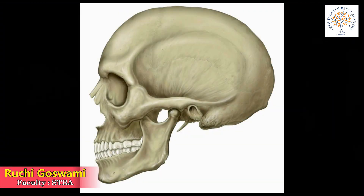The skull is the bony framework of our head. It protects our sensitive brain and has holes for the eyes, nose, mouth, and ears. There are a total of 22 bones inside it which are interlocked. The lower jaw bone is the only bone that is movable and it has teeth inside. The skull is made up of eight bones. It protects the brain which controls all body functions. In a newborn baby, the top of the head may be soft.